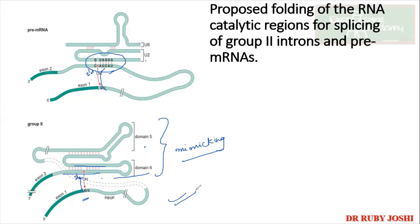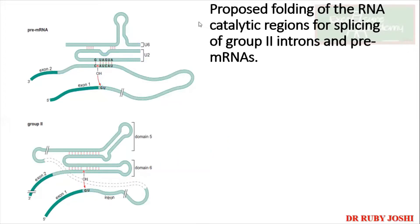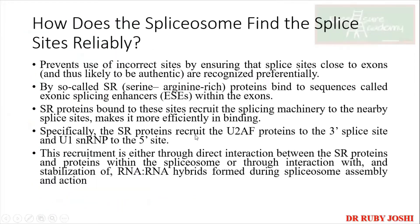This is a mechanism you need to understand from the diagram. If a question asks who is mimicking what, remember that U6 and U2 are mimicked by domain five and domain six of the Group II RNA self-splicing introns.